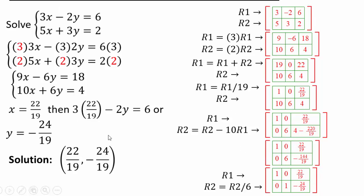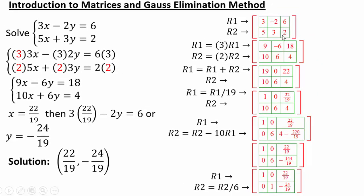You might say this is way too complicated compared to what we did with the elimination method. However, when you have more than 2 variables — 3 variables, 4 variables — this method comes in very handy. These operations used to create new rows are called elementary row operations. The matrix is what you see here: a matrix is an organization of numbers in rows and columns. When you use a matrix where you have the coefficients of x, coefficients of y, and a placeholder for the constant terms instead of an equals sign, it's called the augmented matrix. An augmented matrix is really just a representation of the system of equations in matrix form.